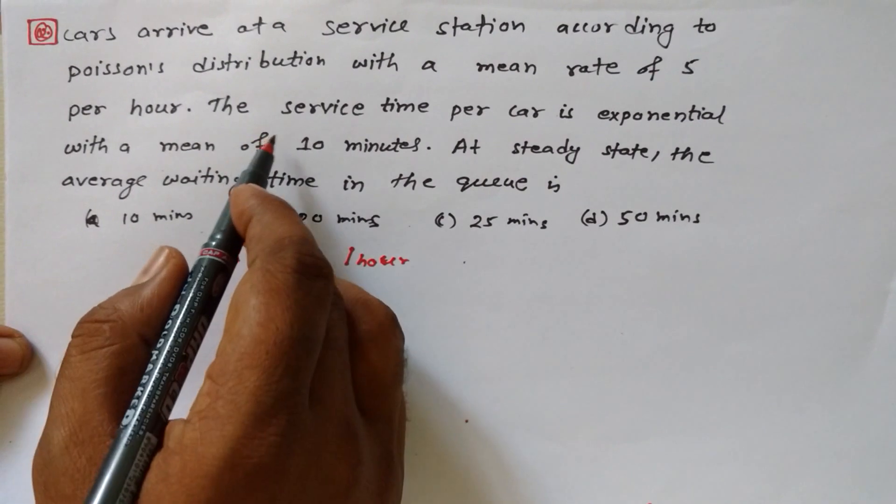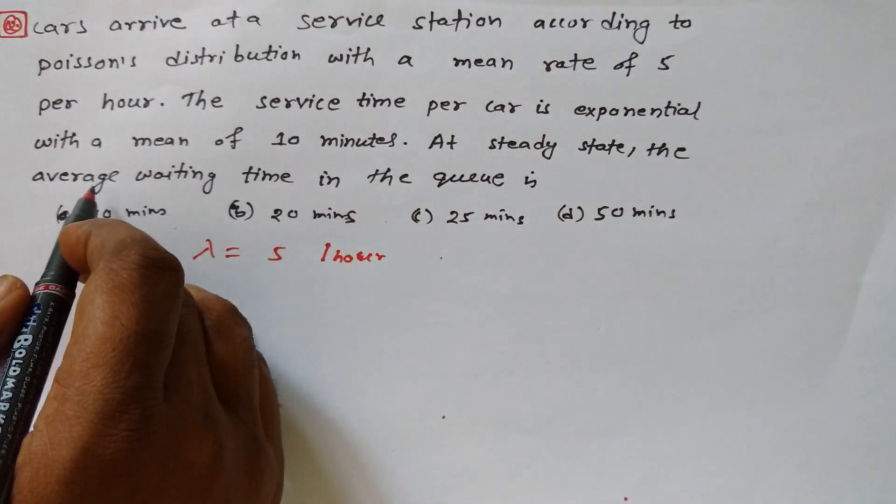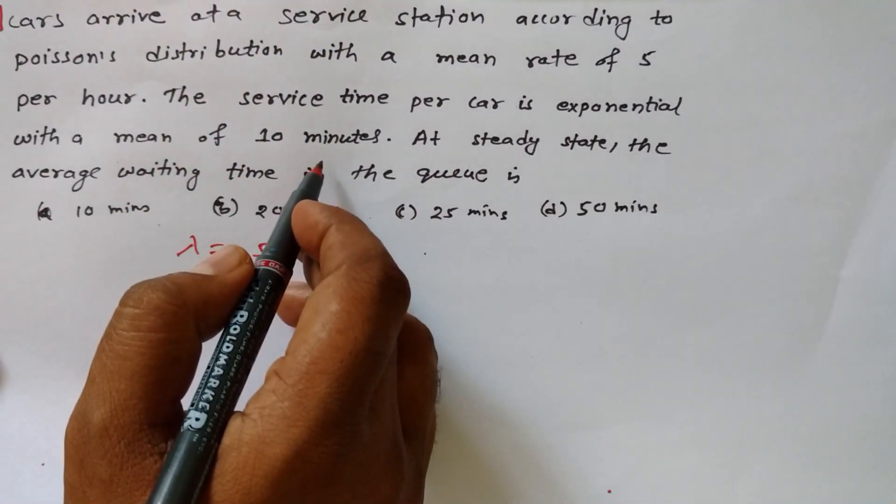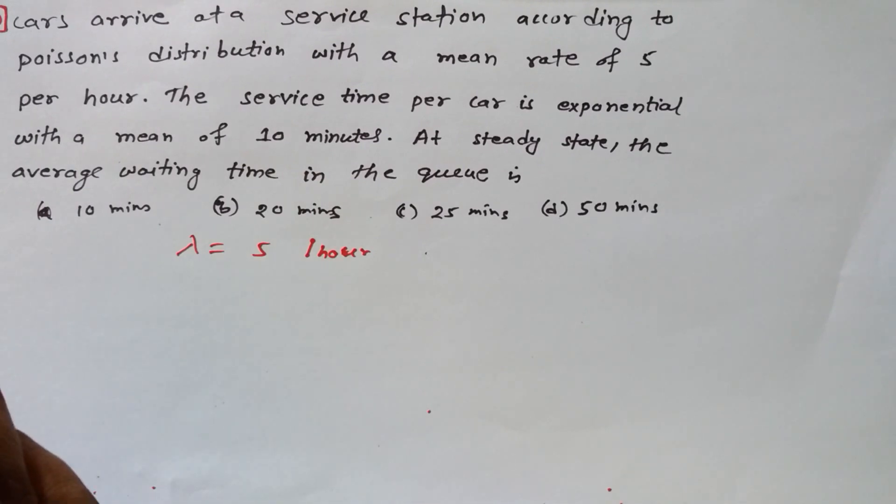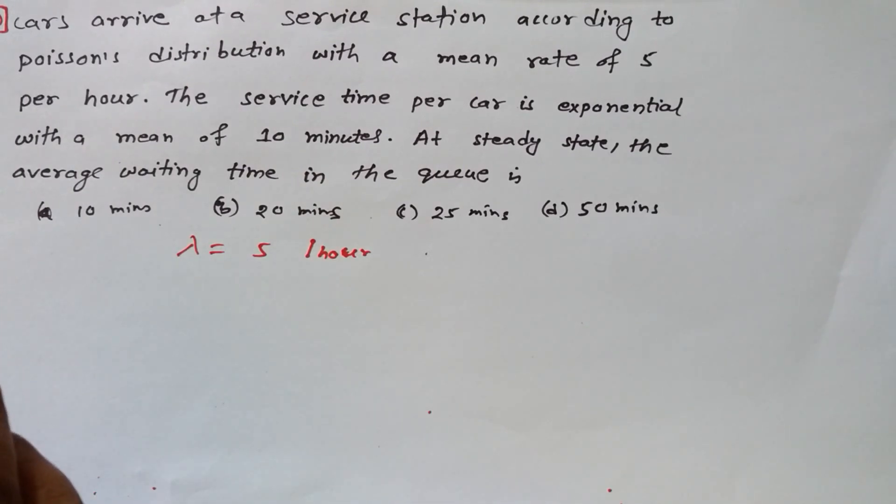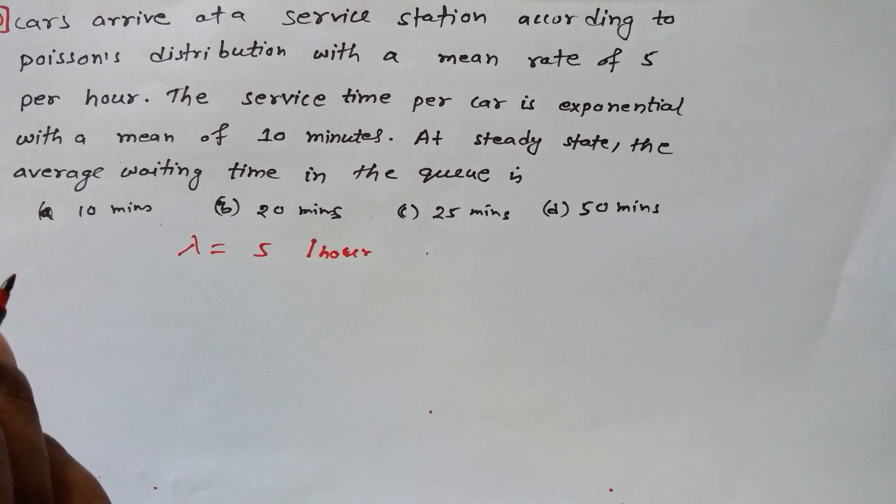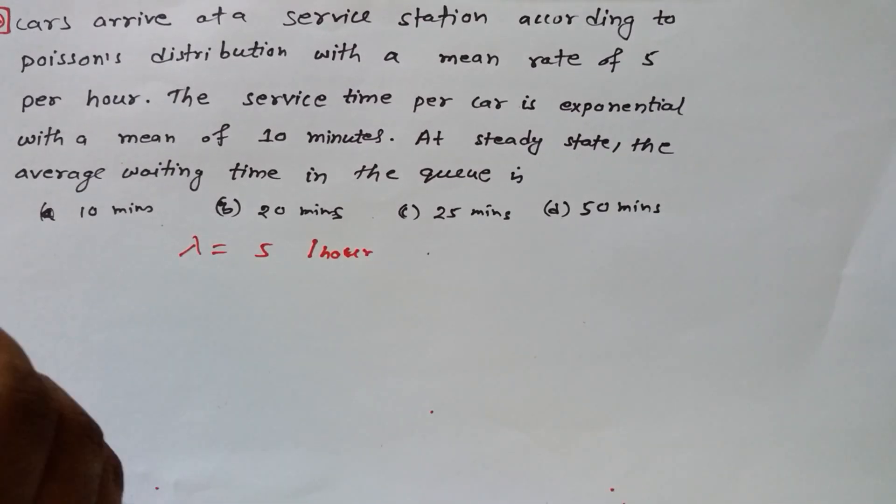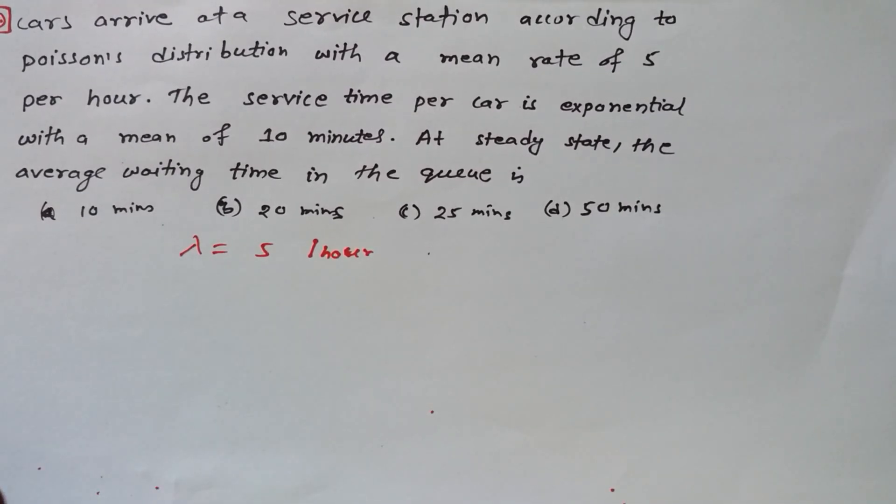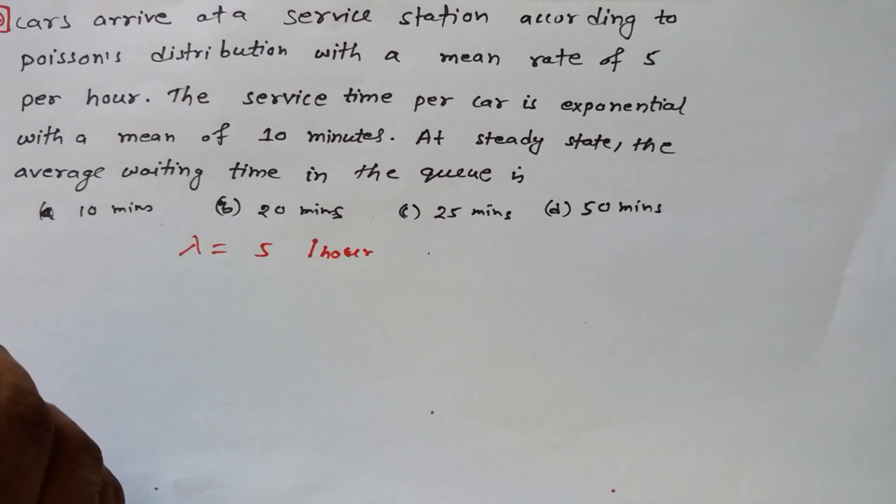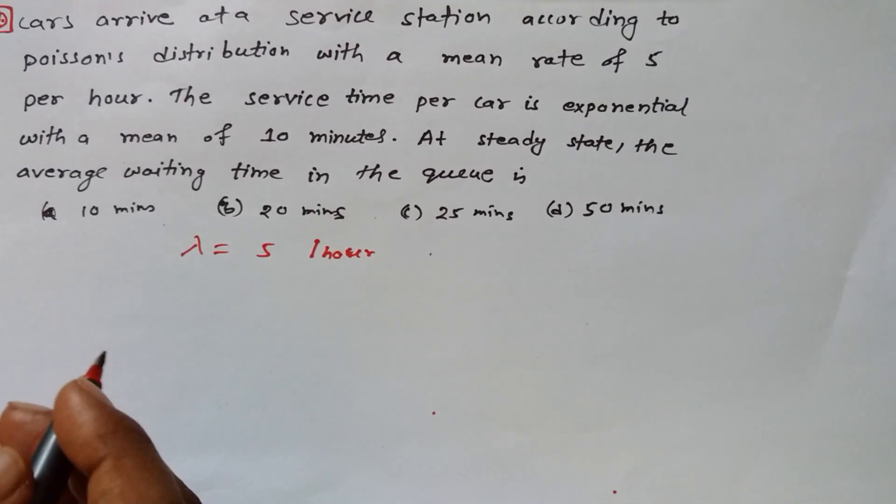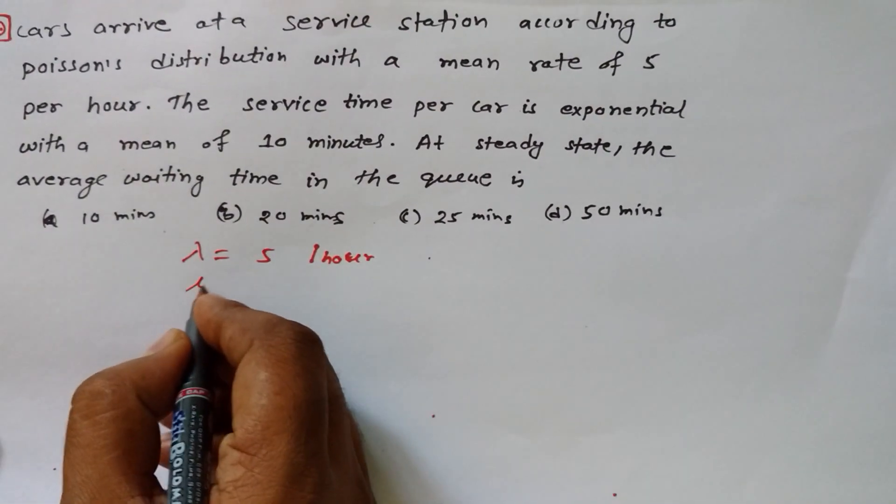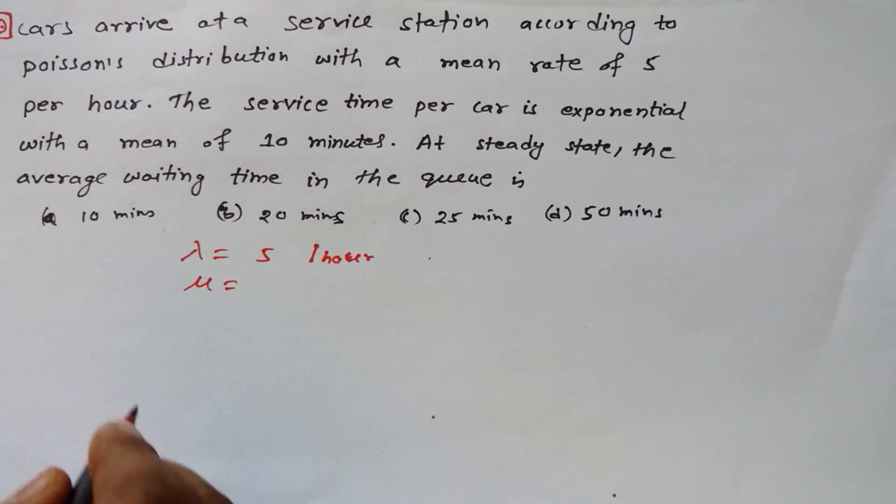The service time per car is exponential with the mean of 10 minutes. That means how many people can they provide service? 6 per hour, right. 60 divided by 10 equals 6. So mu is denoted as service rate, 6 per hour.